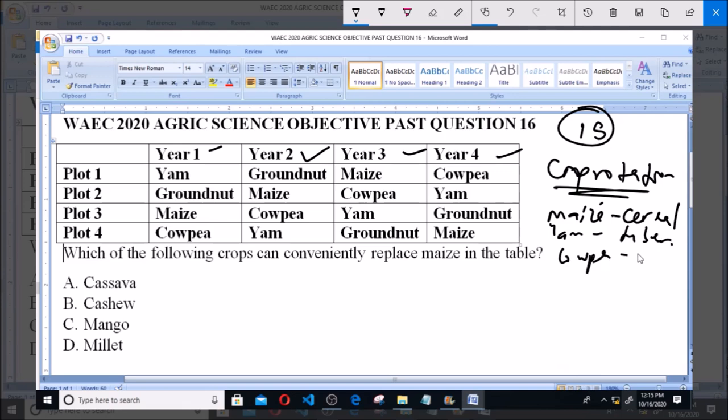Yam is a tuber. Cowpea and groundnut are legumes.